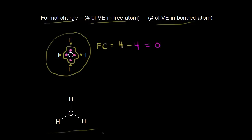Let's do another example. This one is different because this time we have three bonds. Let me draw in the electrons in those bonds. The formal charge on carbon equals the number of valence electrons carbon is supposed to have, which is four, minus the number it actually has in our drawing. We divide up the electrons in our bonds and carbon has only three electrons around it this time: one, two, and three. So four minus three equals plus one — carbon has a formal charge of plus one.